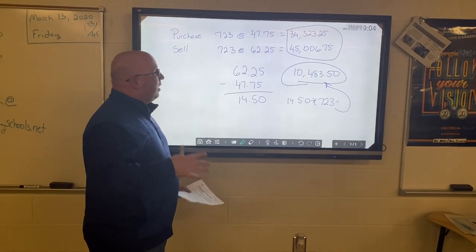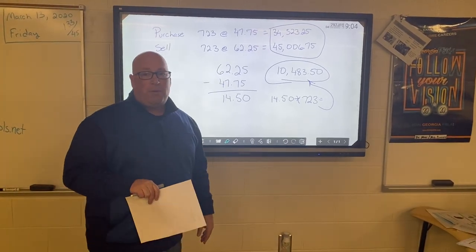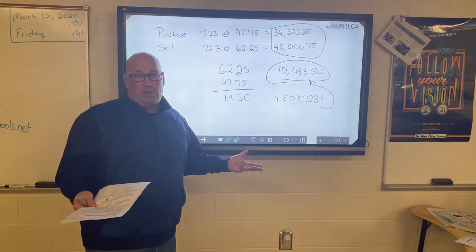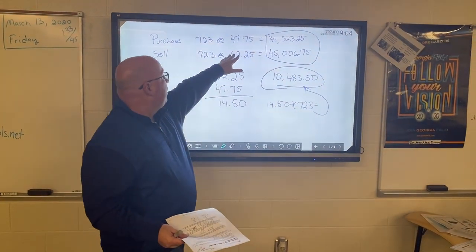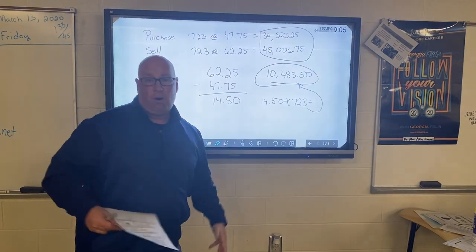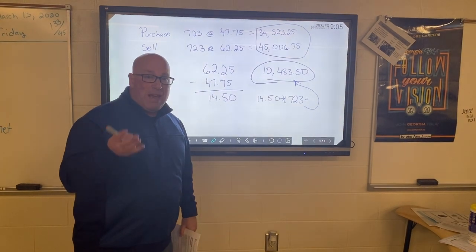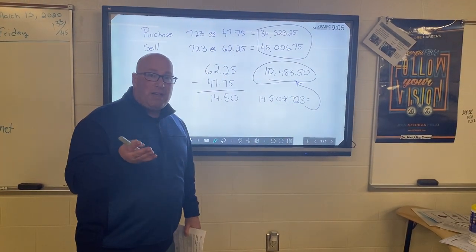So for every one of those shares we made $14.50. We had 723 shares, so we take that multiply times 723 and when we do that we also get $10,483.50. So you can do it either one of those ways. Now a couple things to note on this: we made money. Stocks go up and down. In a situation we have here, we could have lost money if we'd sold it at $30 a share or $45 a share.